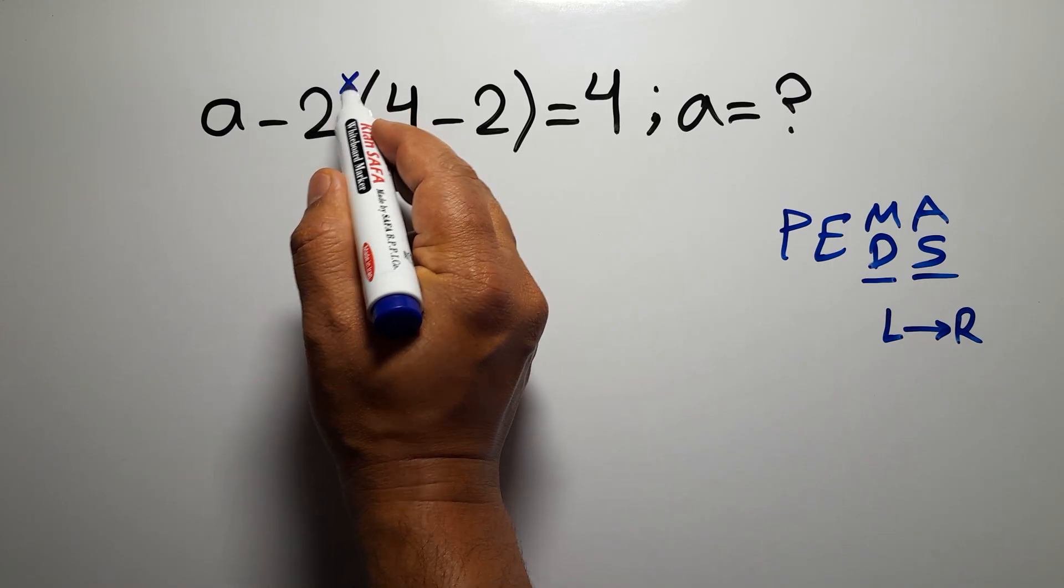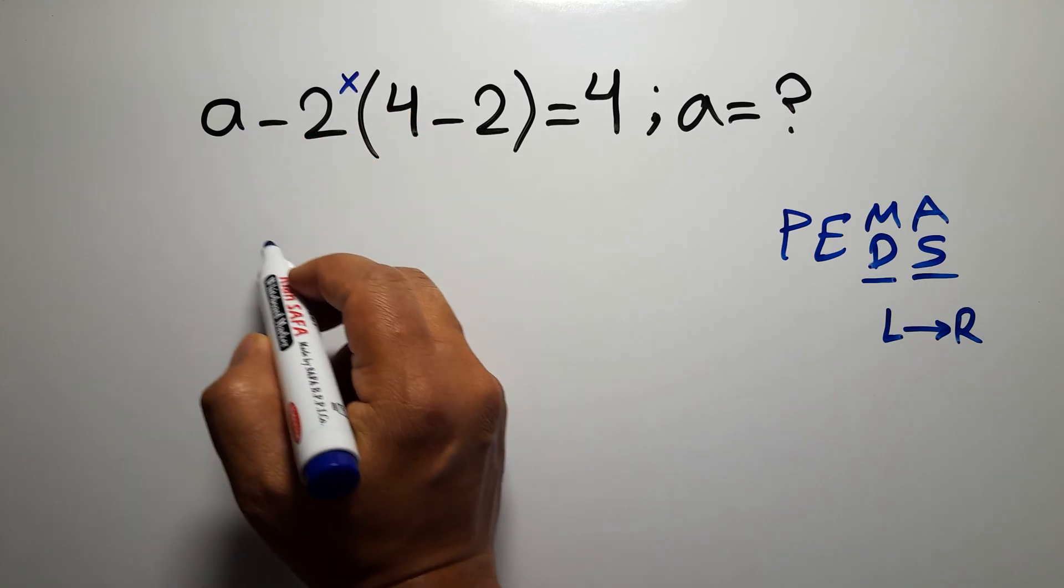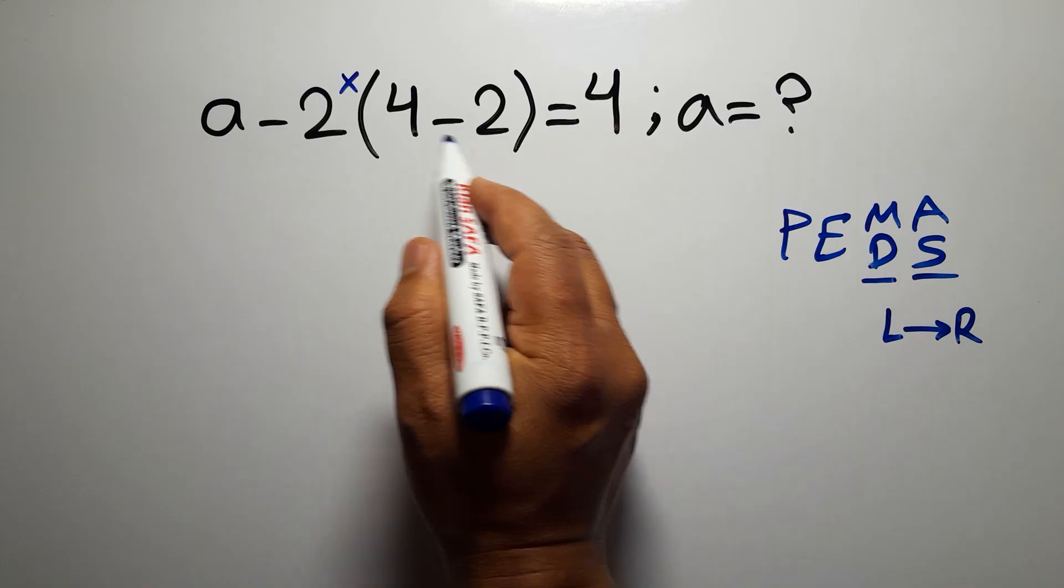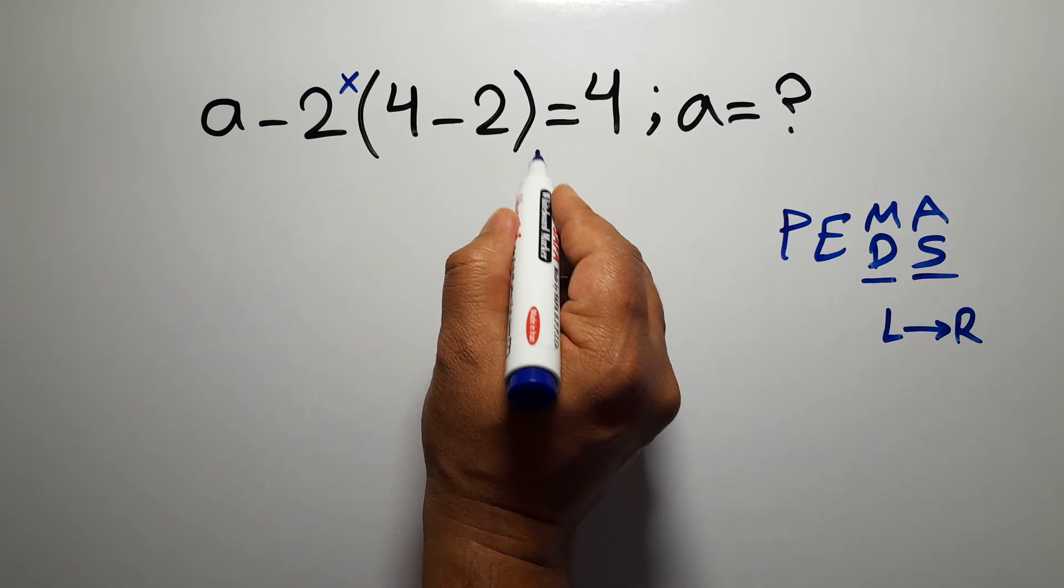Inside this parentheses, we have 4 minus 2, which gives us 2.